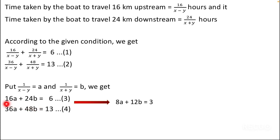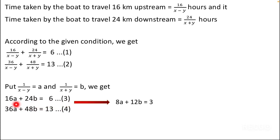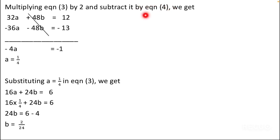To solve, we need to make the coefficients of either a or b the same. I will multiply equation 3 by 2, giving 32a + 48b = 12. Subtracting equation 4 from this: (32a + 48b) minus (36a + 48b) equals 12 minus 13. The 48b terms cancel, giving minus 4a = minus 1, so a = 1/4.